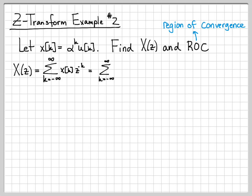And then we can go ahead and plug in the specifics for our problem. K equals minus infinity to infinity, alpha to the K U of K times Z to the minus K. And then since the unit step is zero for all negative time, it turns on at K equals zero. We can let the unit step manipulate the limits of the sum and simplify this to K equals zero to infinity of alpha to the K Z to the minus K.